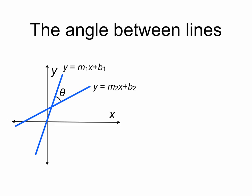Instead of drawing theta directly, we can draw our angles phi1 and phi2 — the respective angles that these lines make with the x-axis — and we can relate these angles back to theta using the relation theta equals phi1 minus phi2.